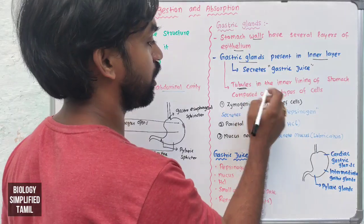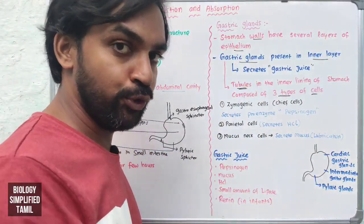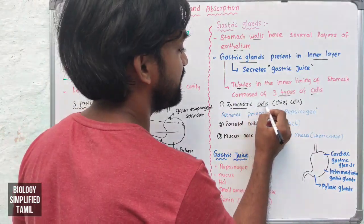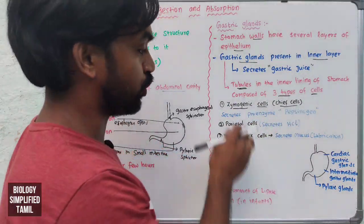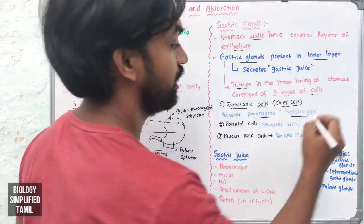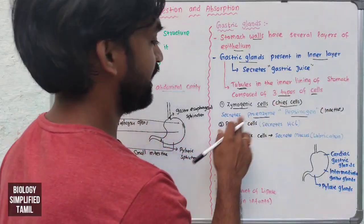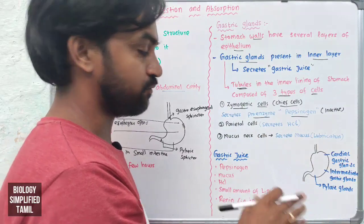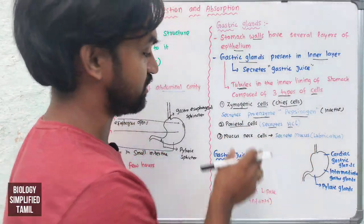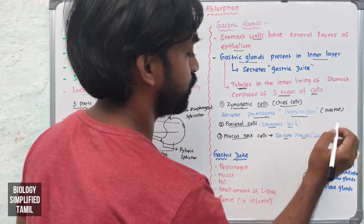The gastric glands are tubule-like structures composed of three types of cells. First, zymogenic cells (chief cells) produce the pro-enzyme pepsinogen, which is inactive. Second, parietal cells secrete hydrochloric acid. Third, mucus neck cells secrete mucus.